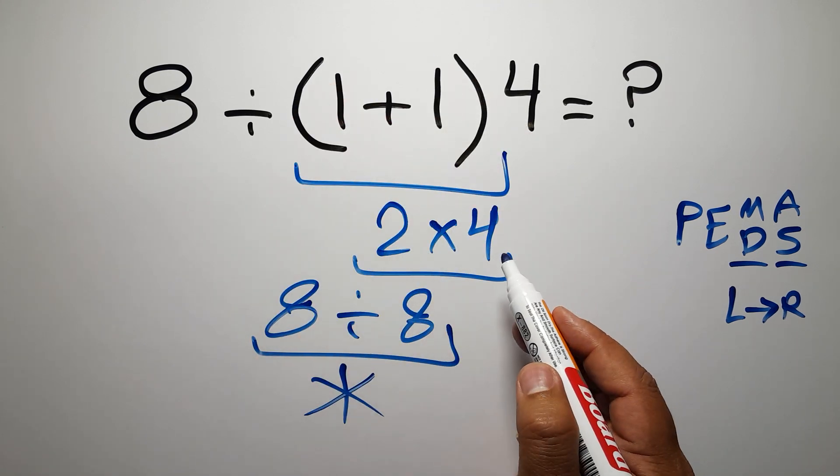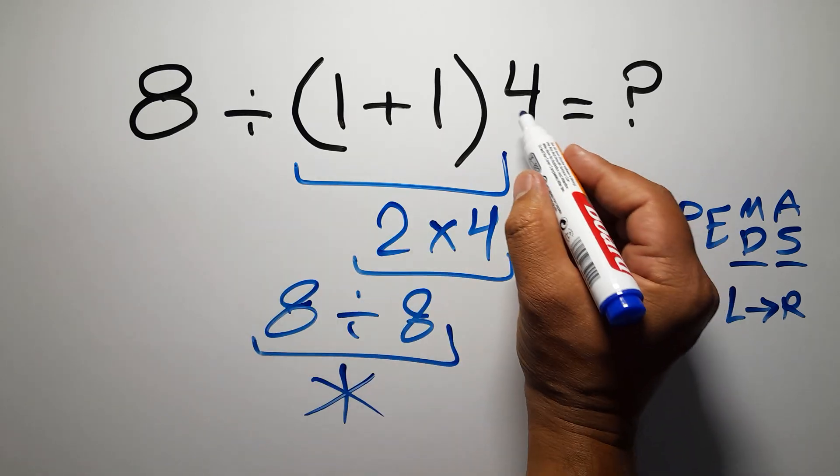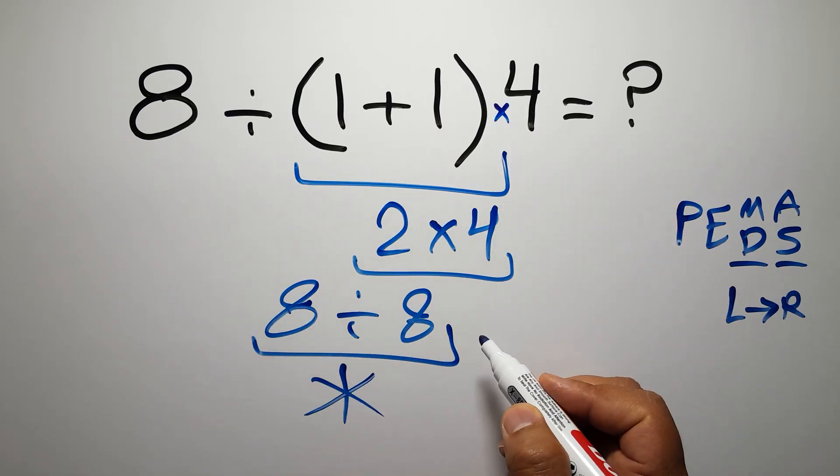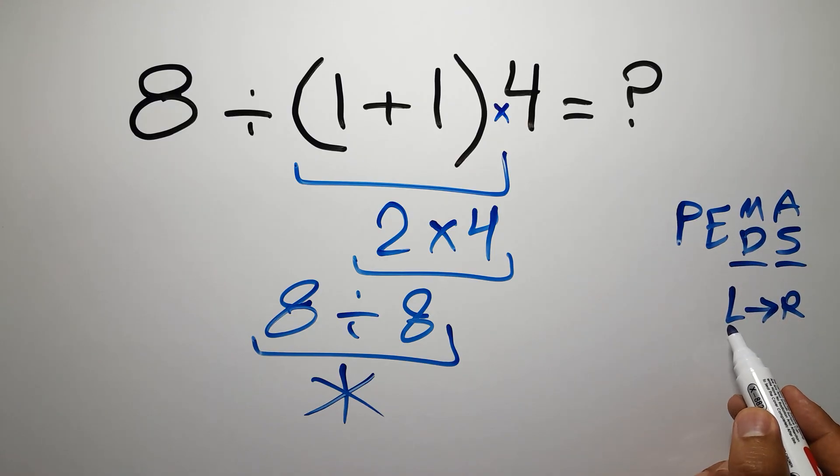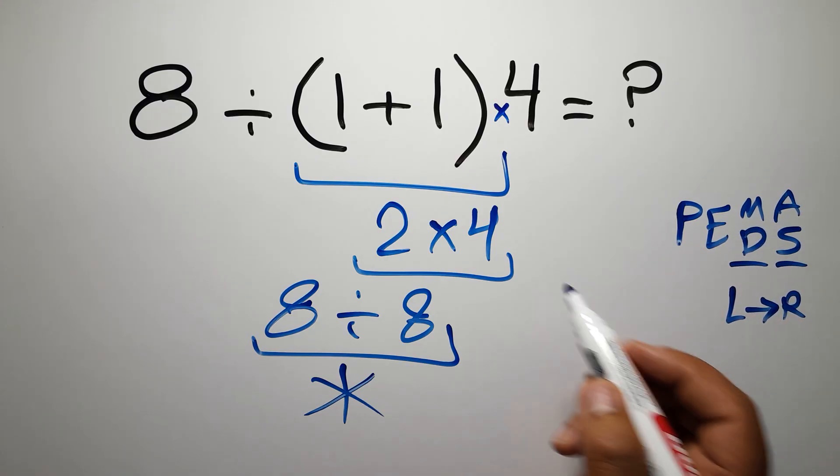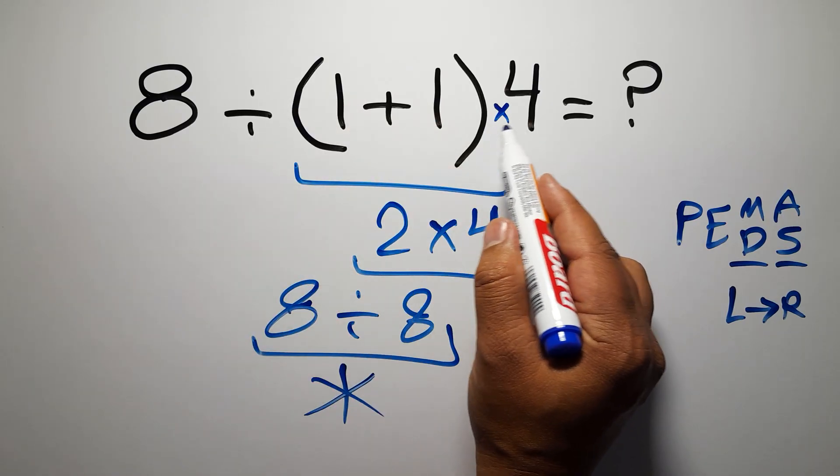So here, first we have to do this parentheses. After this parentheses, we have one division and one multiplication. As I said, multiplication and division have equal priority, and we have to work from left to right. So after this parentheses, we have to do this division, not this multiplication.